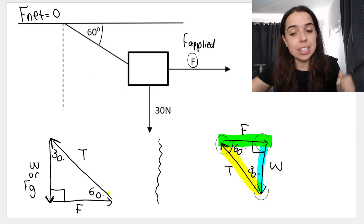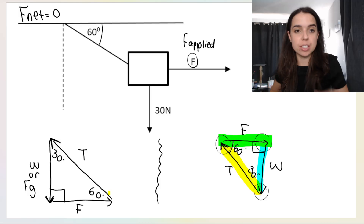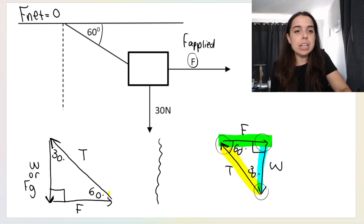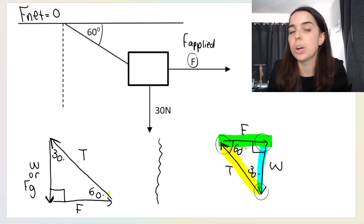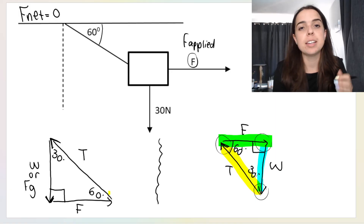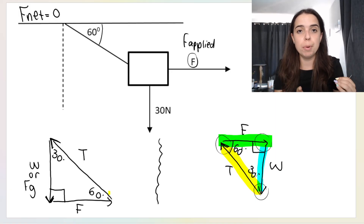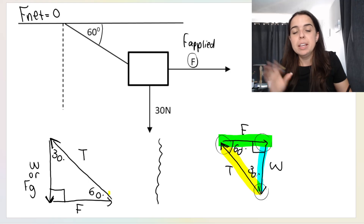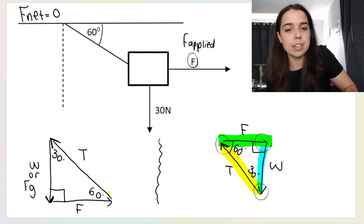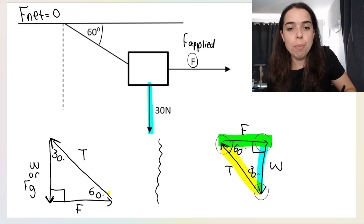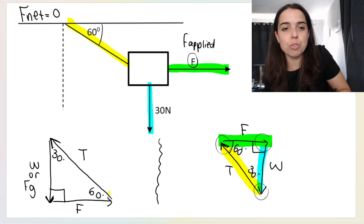How I got the triangle in this example, which I did in the previous video, is as follows. I know that there are three forces acting on my box and that my box is in equilibrium — the question will say something like the box is stationary, not moving, or in equilibrium. My three forces are: weight acting straight down, tension in a rope, and an applied force pulling the box to the right.